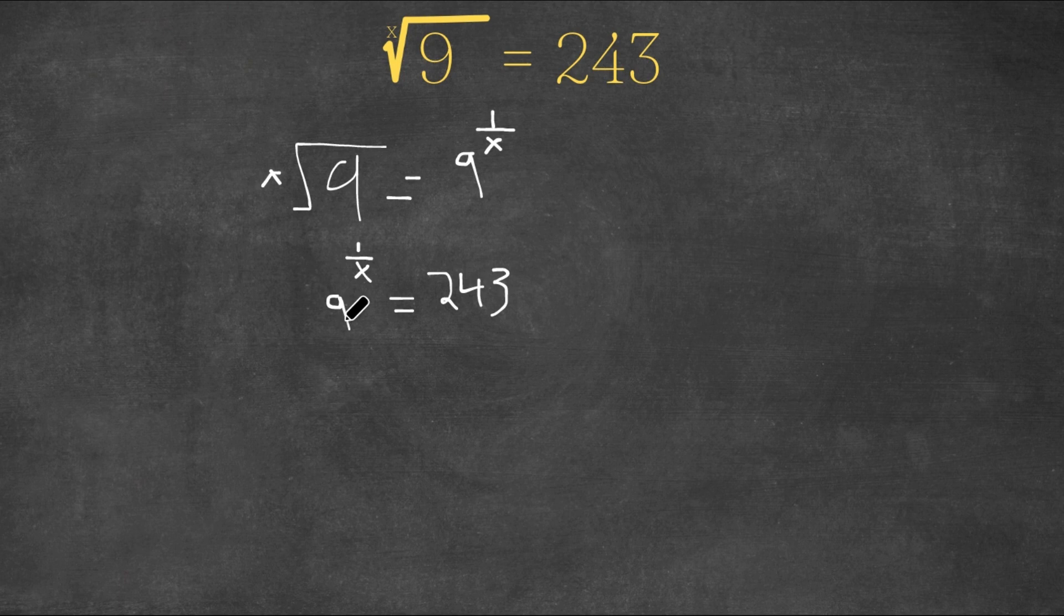So what's an alternate form of 9? 9 is equal to 3 to the power of 2. So this is another way of writing 9. And this is to the power of 1 over x.